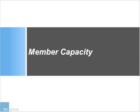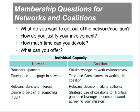First is the concept of member capacity. At a minimum, we would expect an interorganizational relationship to be the sum of its individual parts. Understanding the capacity of individual coalition members is therefore advantageous. While there are various ways to do this — such as asset mapping, constituency mapping, and influential analysis — there are basically four primary questions that any member participating in an interorganizational relationship needs to be able to answer: What do you want to get out of the network or coalition? How do you justify your involvement? How much time can you devote? And what can you offer?